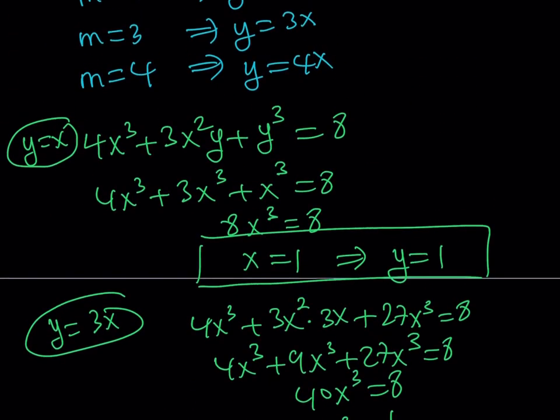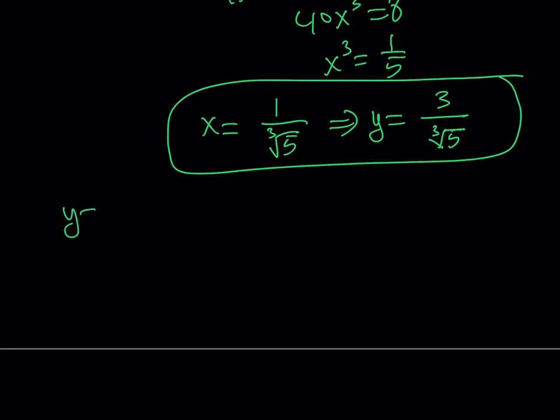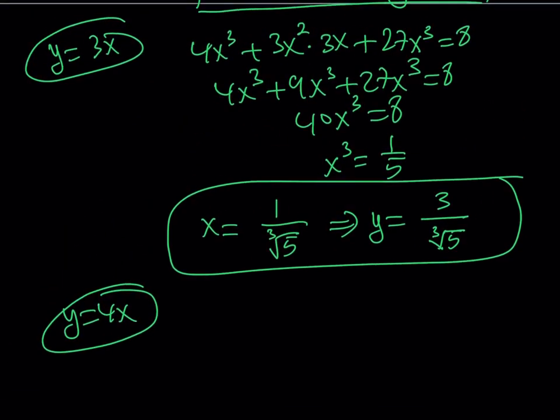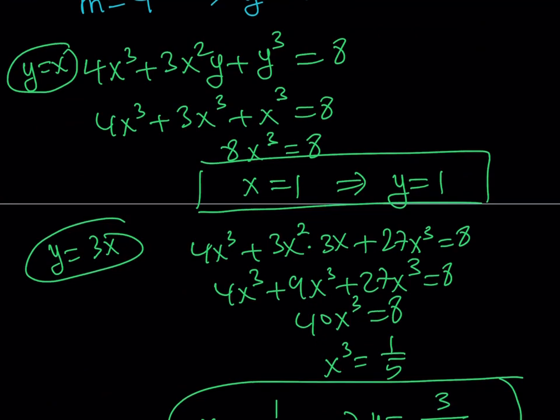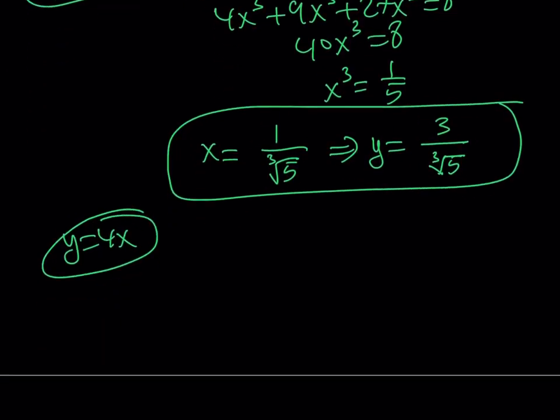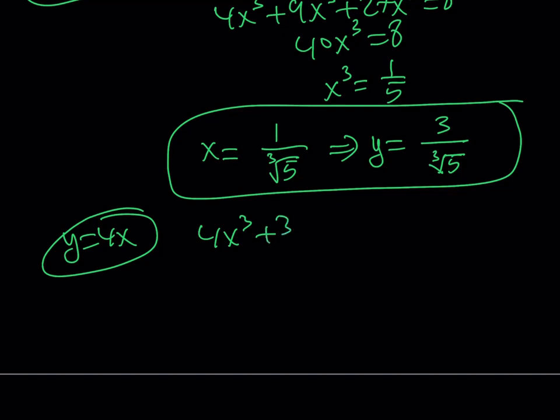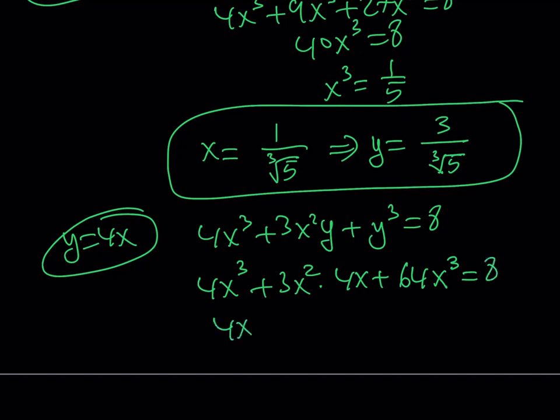And our third one is going to have y = 4x. Let's write that down. So y = 4x, and I'm going to substitute that into the original equation. So my original equation is 4x³ + 3x²y + y³ = 8. I'm going to replace y with 4x. That should give me 4x³ + 3x²(4x) + (4x)³, which should give you 64x³. Let's simplify this.